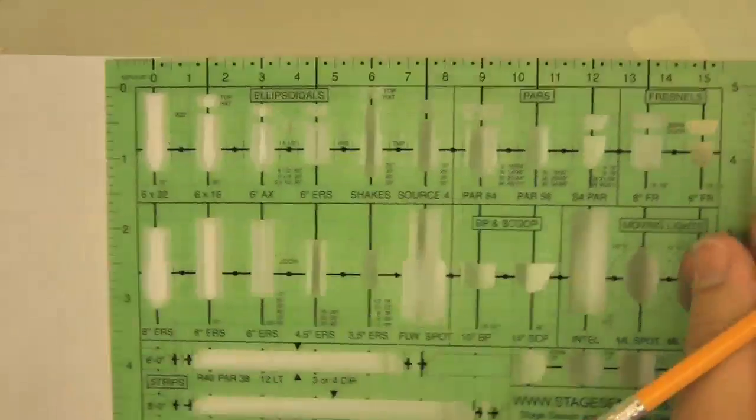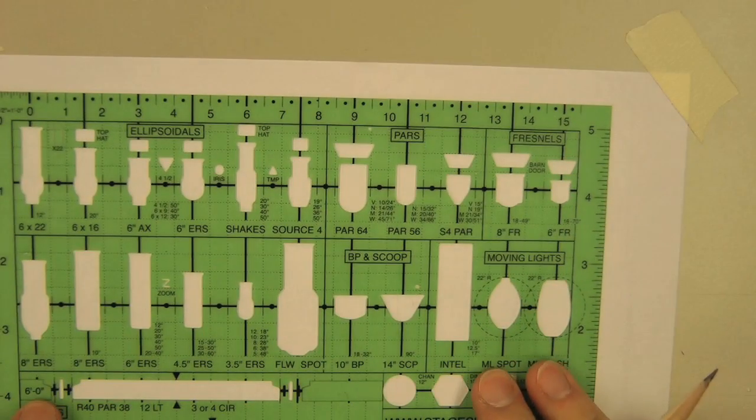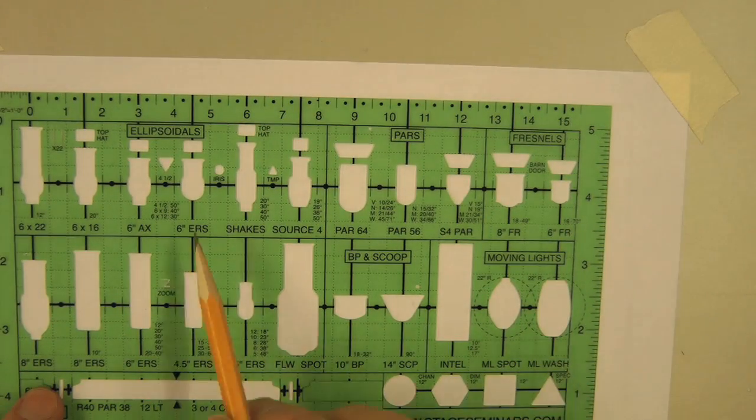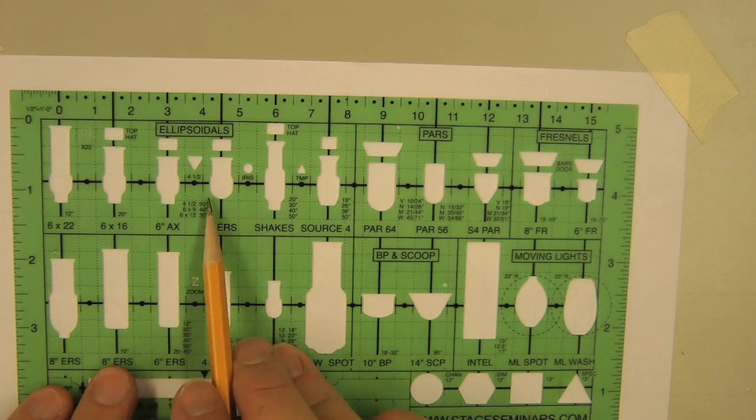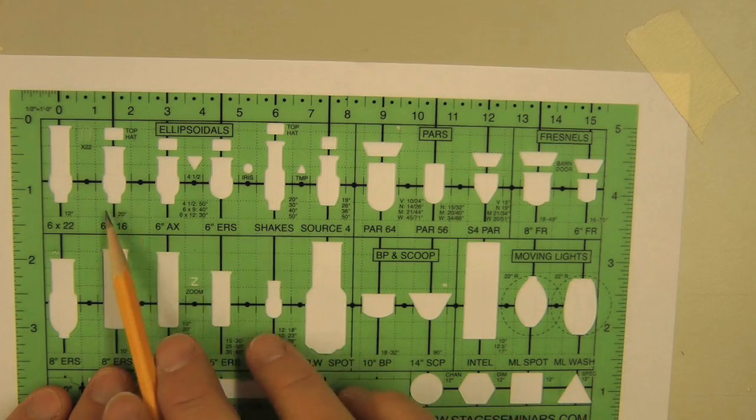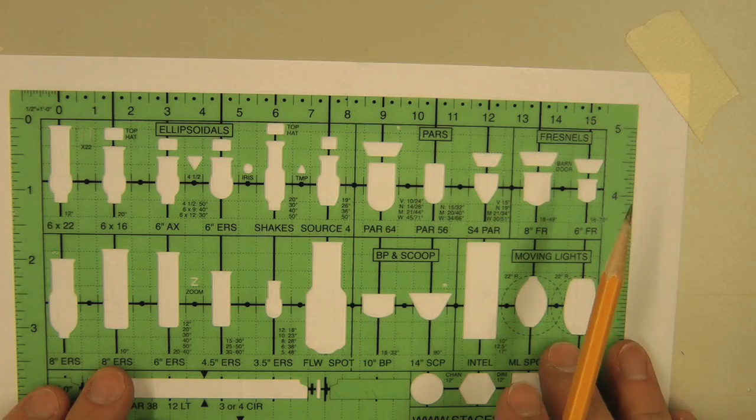This is a lighting template, a half inch lighting template, and it's the type of template I use to do this drafting. This is designed by a guy named Steve Shelley, who also wrote a terrific book for lighting paperwork. These are all spaced evenly on 18 inch centers.